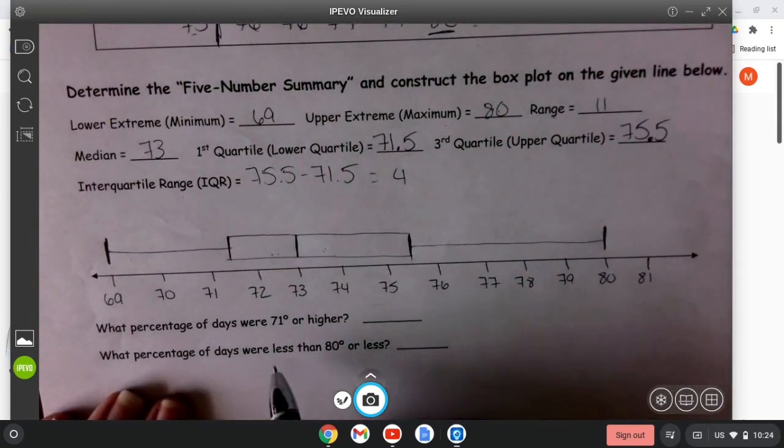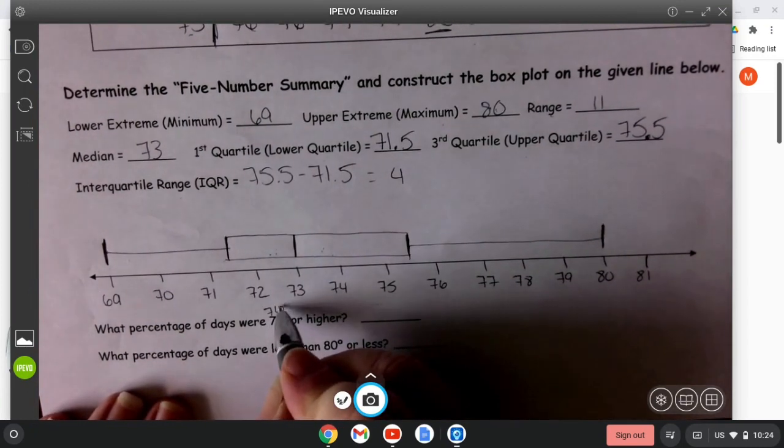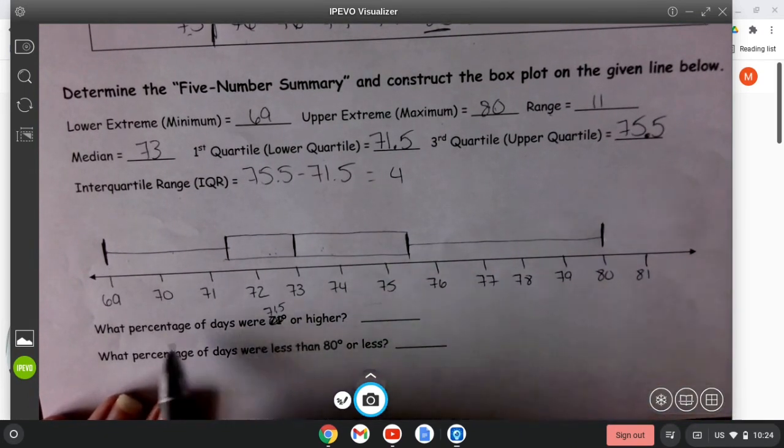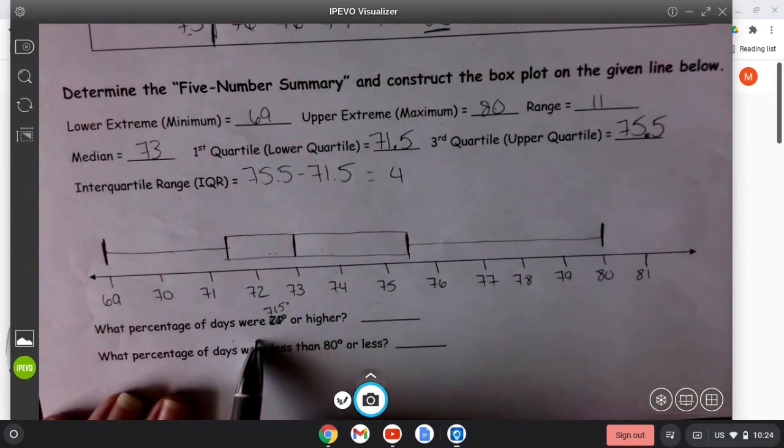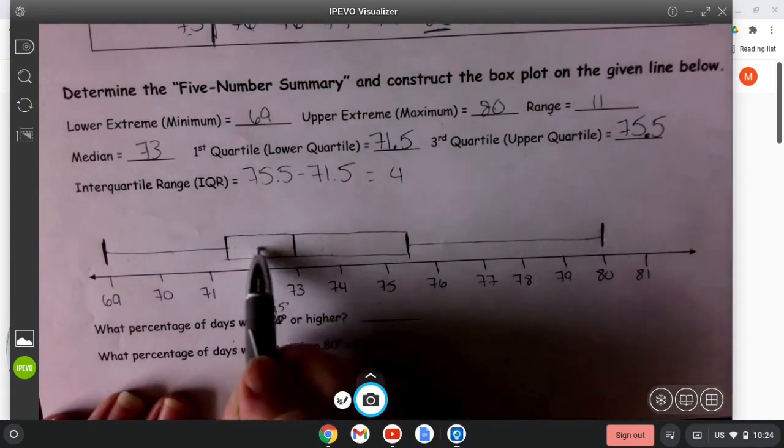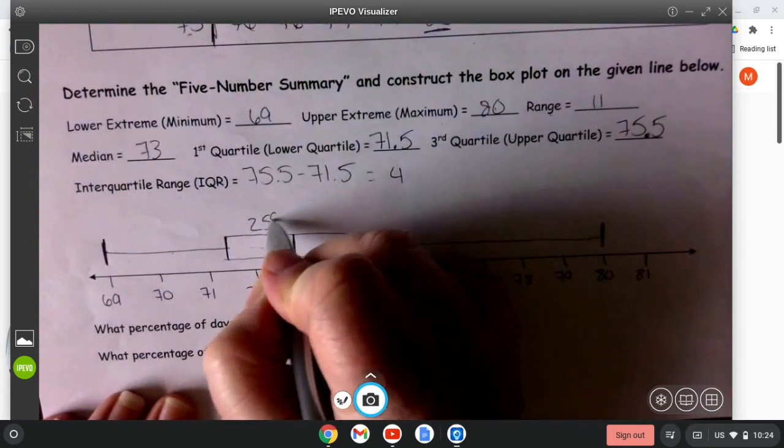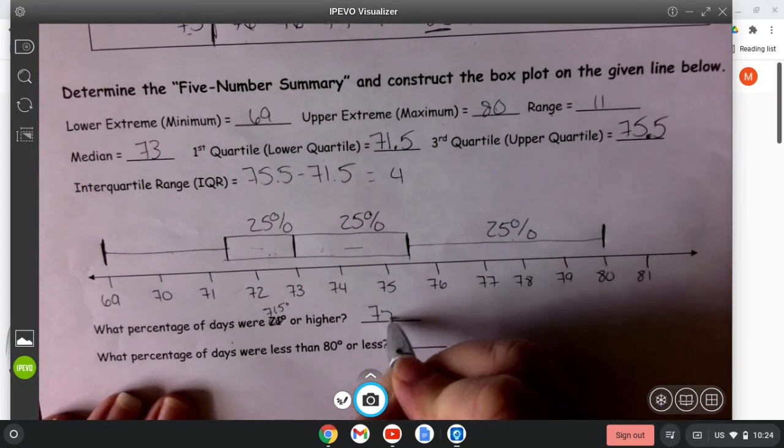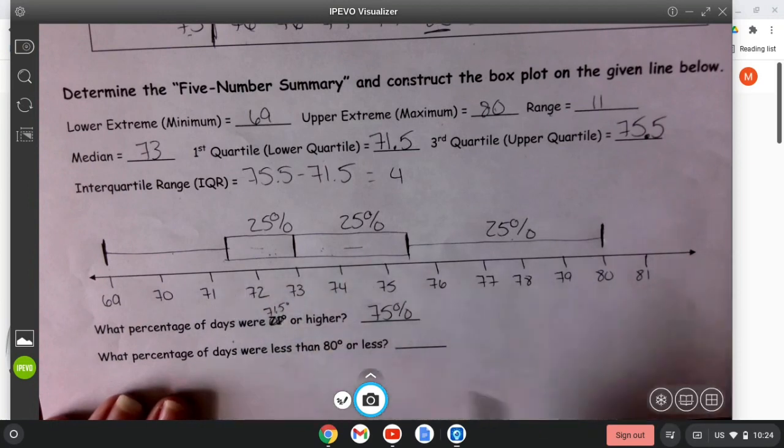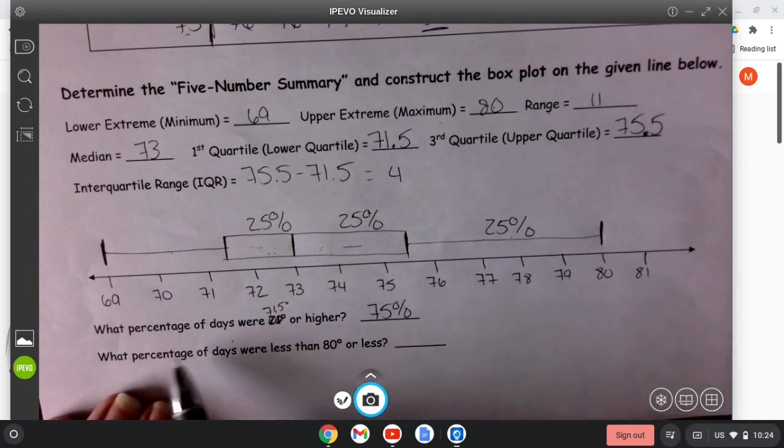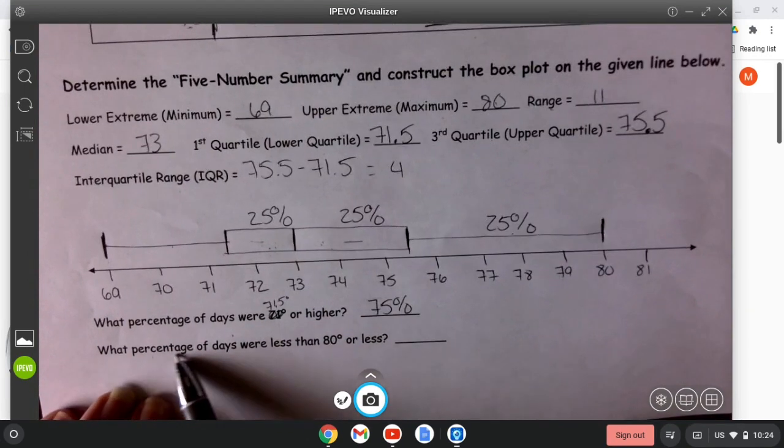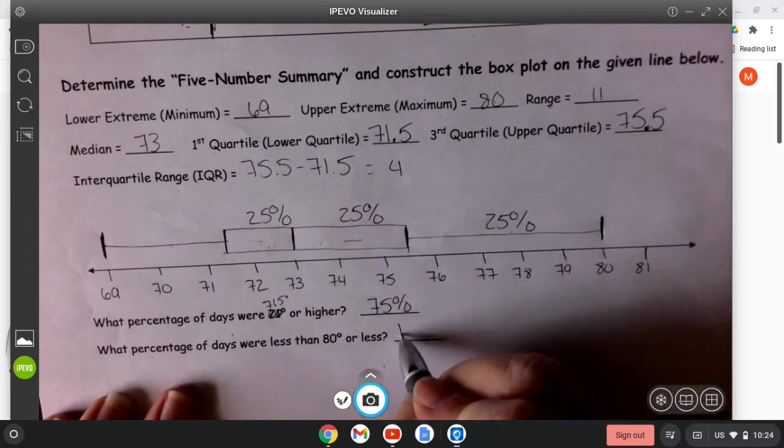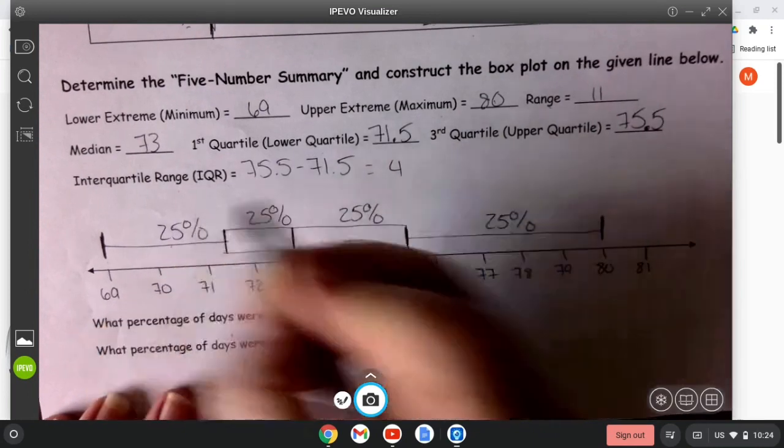They should be able to answer questions concerning the box and whisker plot, knowing that each section is broken apart into 25 percent sections. So the percentage of days that were 71 and a half degrees or higher: we would count the sections, and so each one represents 25 percent of the data, so this would mean that 75 percent of our days that we recorded were above that first quartile. And here's another question that could possibly be asked: what percentage of days were less than 80 degrees or less? That would be all of it, so the percent would be 100 percent.